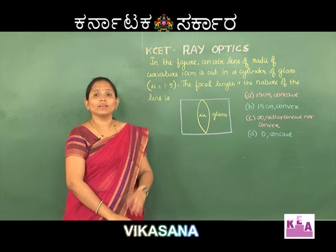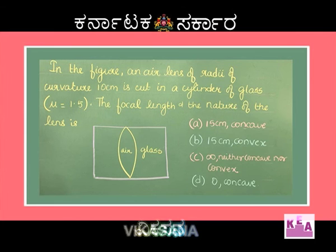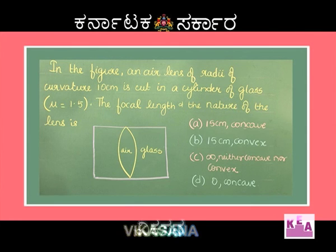Students, let us start solving the questions now. The first question is: In the figure, an air lens of radii of curvature 10 cm is cut in a cylinder of glass with refractive index 1.5. What is the focal length and the nature of the lens? Options: A. 15 cm and concave, B. 15 cm and convex, C. Infinity, neither concave nor convex, D. 0 and concave.